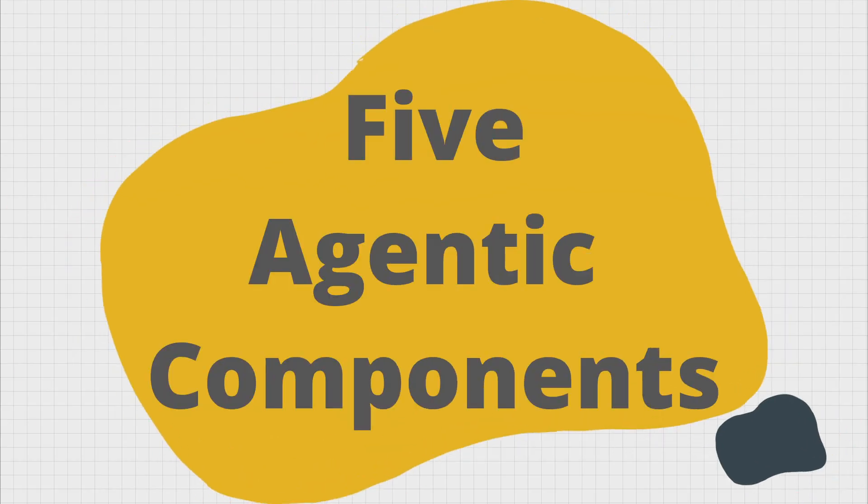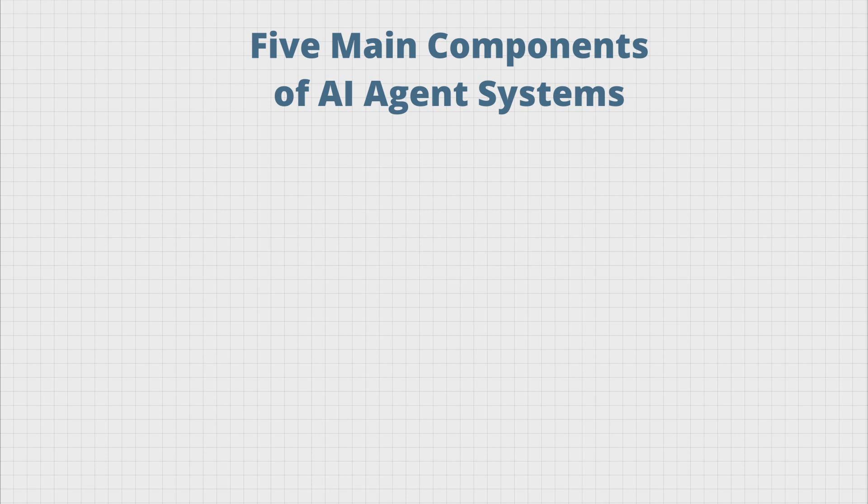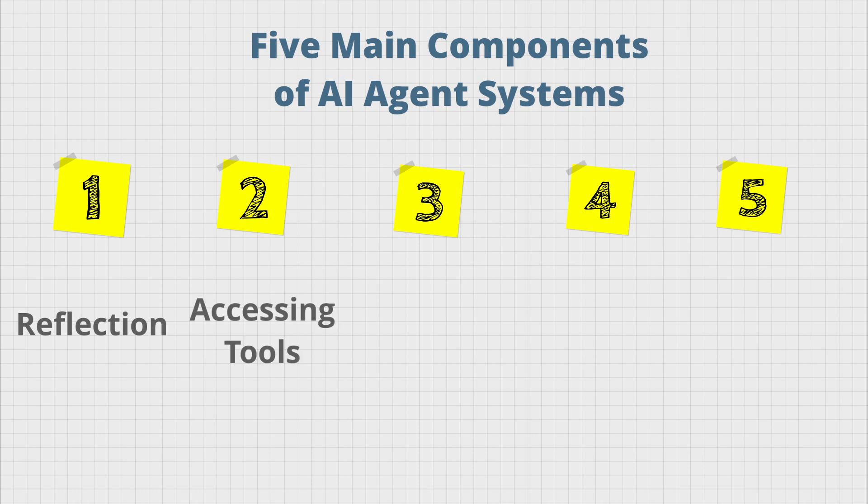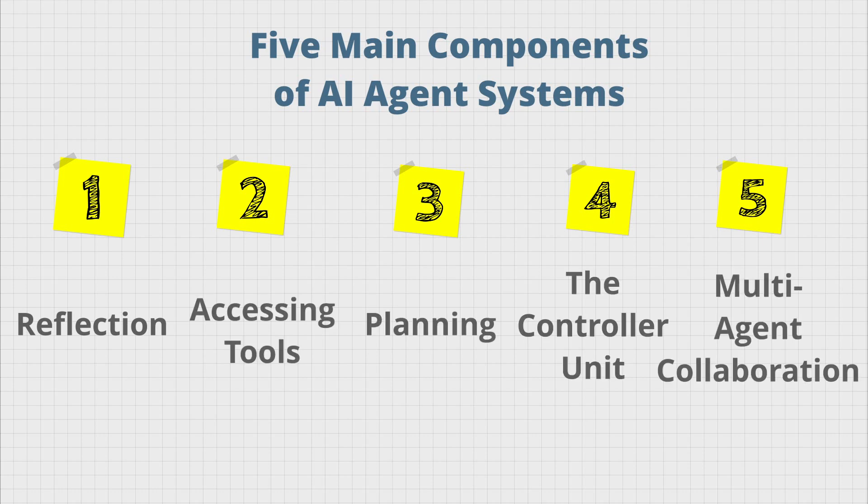Now that we understand what makes something an AI agent, let's look at the five fundamental components that power them: Reflection, accessing tools, planning, the controller you need, and multi-agent collaboration that I like to refer to as right tools properly controlled and mastered.